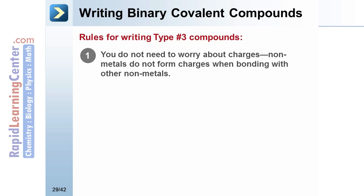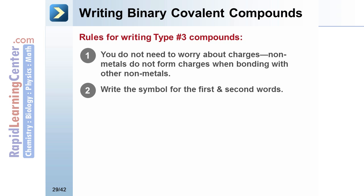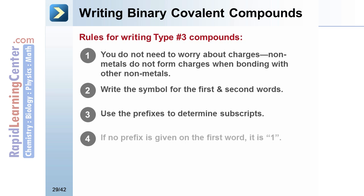You don't need to worry about charges when writing binary covalent compound formulas. Non-metals do not form charges when bonding with other non-metals. Write the symbol for the first and second words. Use the prefixes to determine the subscript. Remember that if no prefix is given on the first word, it is one, as mono is not used with the first word in the compound.